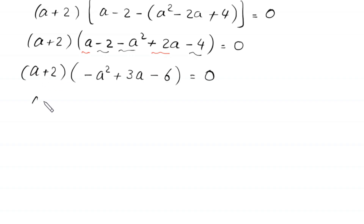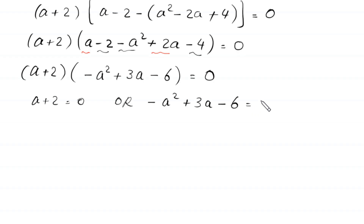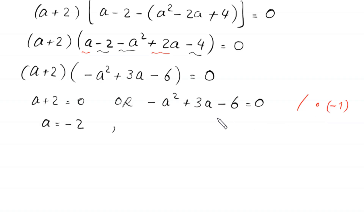So we have (a plus 2) times (negative a squared plus 3a minus 6) is equal to 0. From here, either a plus 2 equals 0, giving us a equals negative 2, or negative a squared plus 3a minus 6 equals 0. For this quadratic, we multiply both sides by negative 1 to get a squared minus 3a plus 6 equals 0.